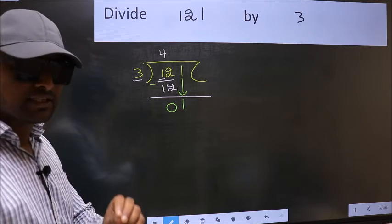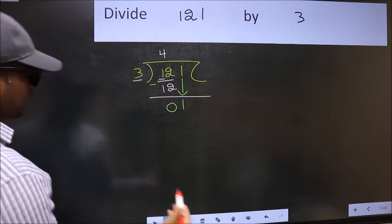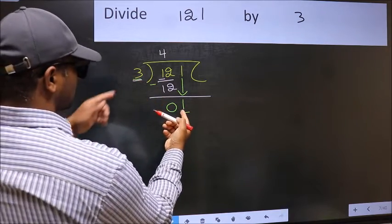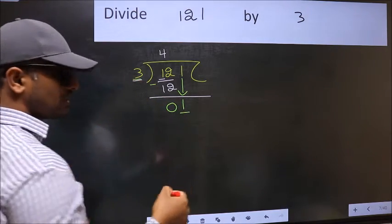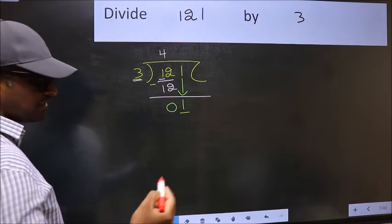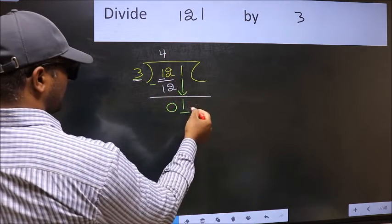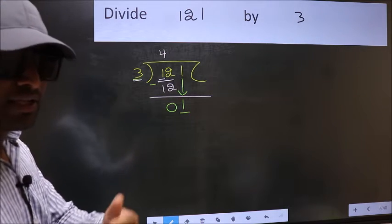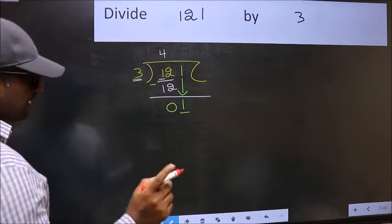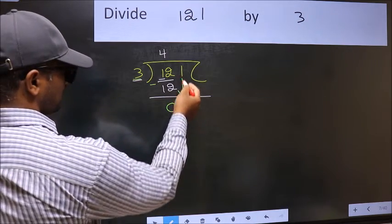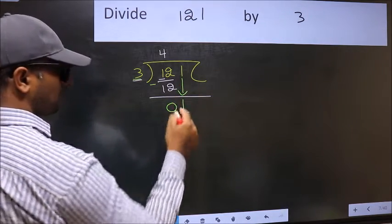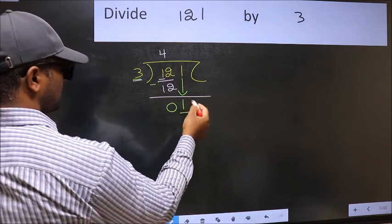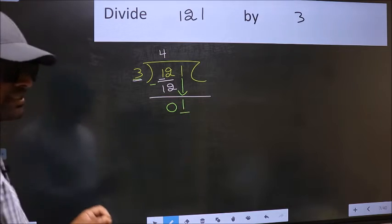And the mistake is this. Here we have 1 and here 3. 1 is smaller than 3. So, what many do is, they directly put a dot and take 0 here. Which is wrong. Why is it wrong? Because, just now you brought this number down. And in the same step, you want to put a dot and take 0. Which is wrong.